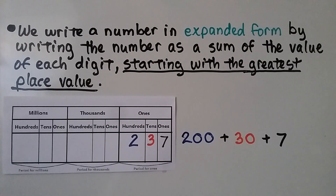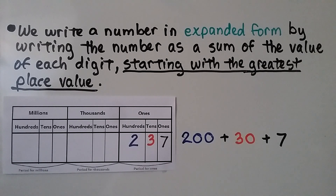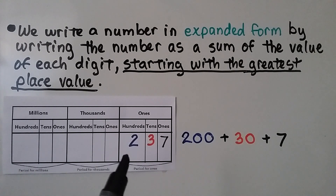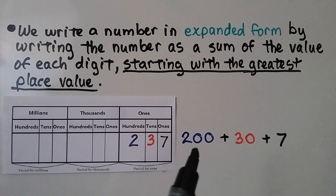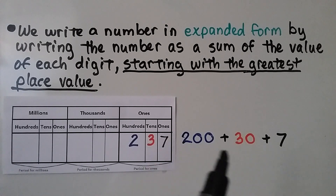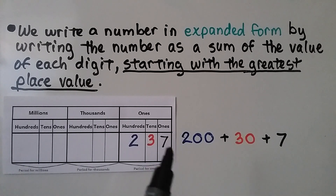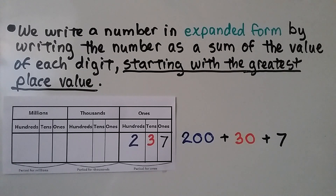We write a number in expanded form by writing it as a sum of the value of each digit, starting with the greatest place value. For 237, we start with the hundreds: there are 2 hundreds, 3 tens which are 30, and 7 ones which is 7. So 237 in expanded form is 200 plus 30 plus 7.